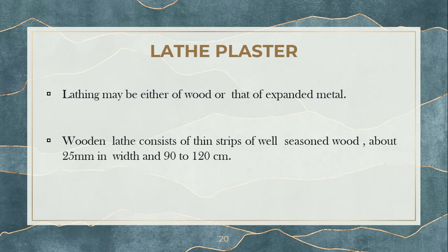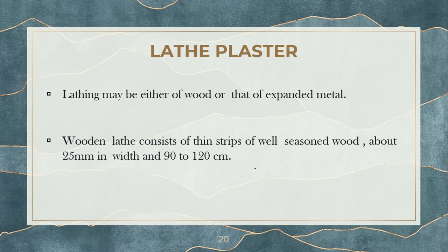Next comes lathe plaster. Lathing may be either of wood or of expanded metal material. A wooden lathe will consist of thin strips of wood which are well seasoned — meaning their moisture is removed — whose width is around 25 mm and whose length is around 90 to 120 centimeters. This is lathe plastering.